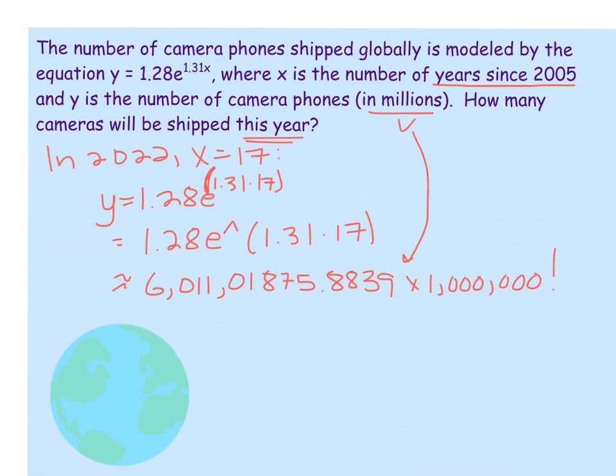We're going to move the decimal over six times. That would mean we have 6011018758839. And that's only four decimals. So we need to add two zeros. If I put my commas after every three, that's hundreds, thousands, millions, billions, trillions. That's 601 trillion phones.